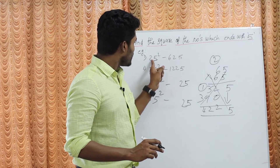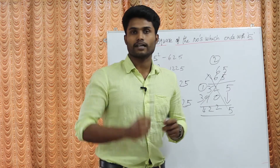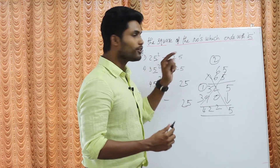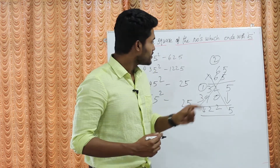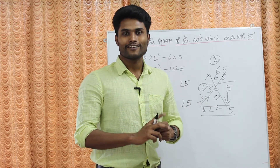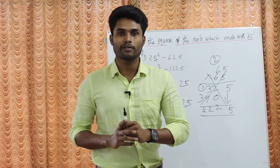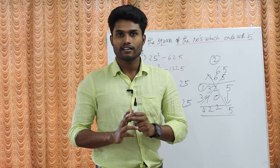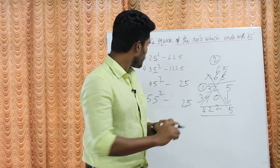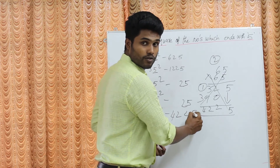For the first part of the answer, take the tens digit and multiply it by the next consecutive number. For example, 25 square: the tens digit is 2, the next number is 3, so 2 into 3 is 6, giving 625. For 65 square: the tens digit is 6, the next number is 7, so 6 into 7 is 42. Therefore, 65 square is 4225.